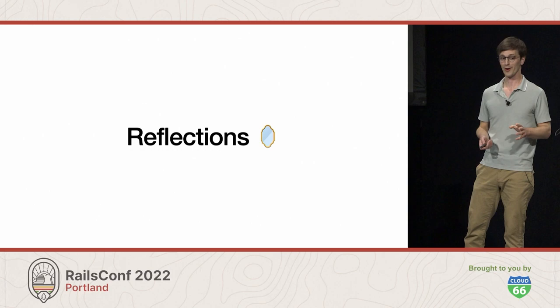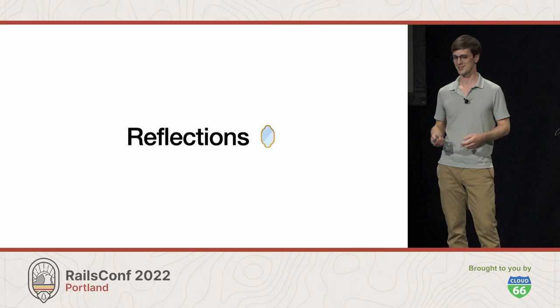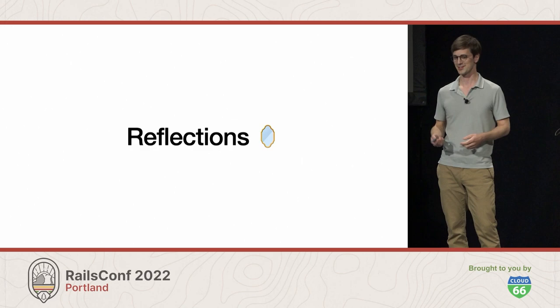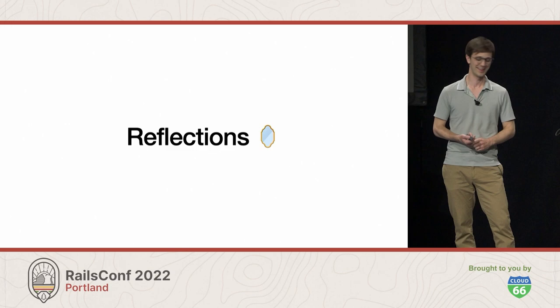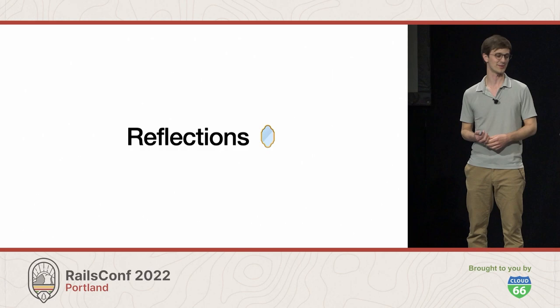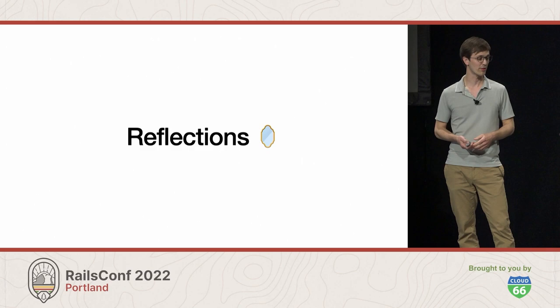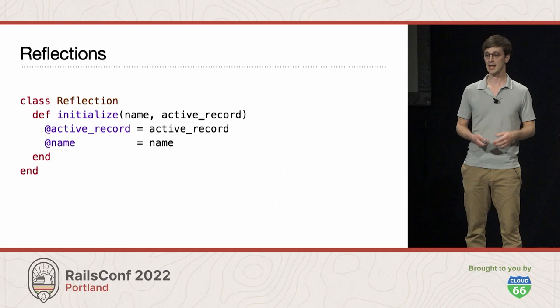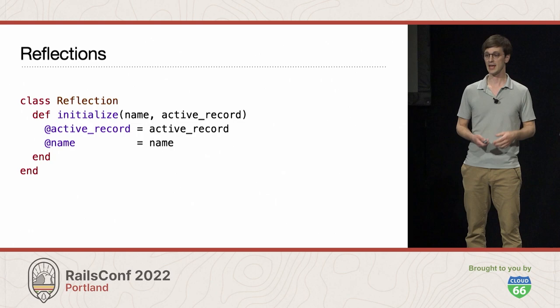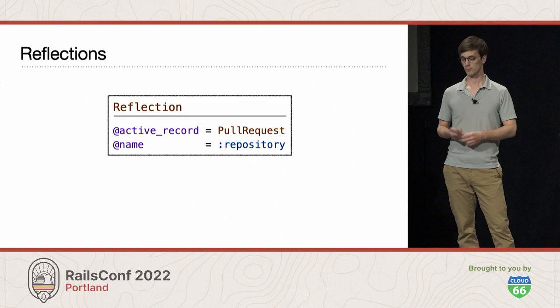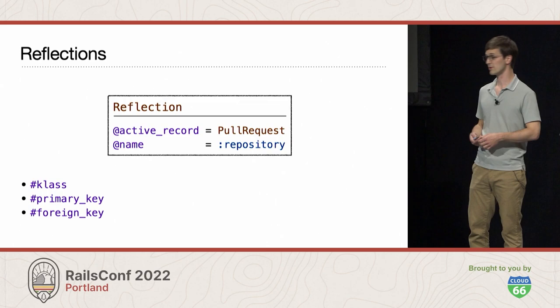I've heard folks say that magic is all smoke and mirrors. So what if we could solve this with a new class called a reflection? This reflection class will store metadata about the association and then let us reflect on it — ask certain kinds of questions, like: what's your primary key? What's your foreign key? What classes are you associated with? This reflection is going to get initialized with the ActiveRecord model you're defining your association in, and the name of the association. In our case that would be: PullRequest as the model, and :repository as the name. Then we can define three methods on this reflection to get those pieces of information we need.